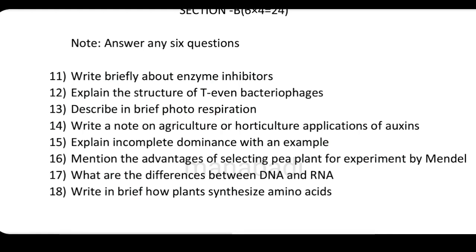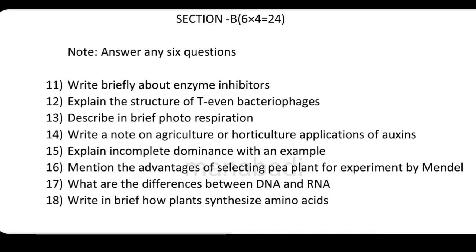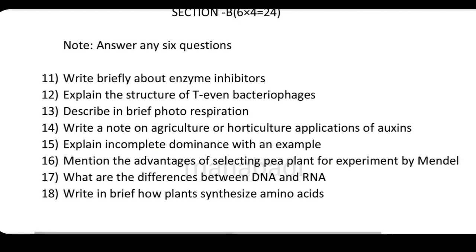Write briefly about enzyme inhibitors. Explain the structure of T-even bacteriophage. Describe briefly about photorespiration. Write a note on agriculture or horticulture application of auxins. Explain incomplete dominance with an example. Mention the advantages of selecting a pea plant for experiment by Mendel. What are the differences between DNA and RNA? And write briefly how the plant synthesizes amino acids.